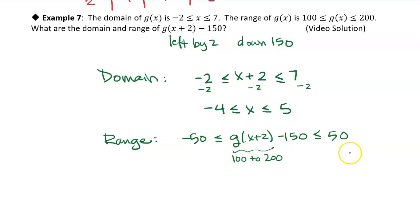So all we did was take the range of the original g of x function and shift it down by 50. This is going down 150. We went down 150. So we just subtracted 150 from the range of g of x.